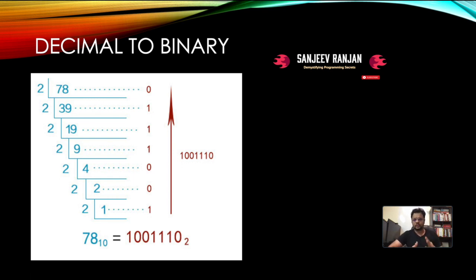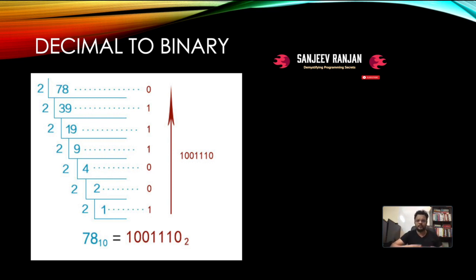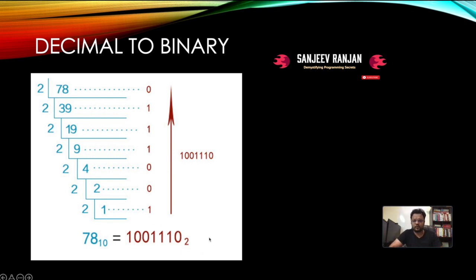The remainders will only ever be 0 or 1 when dividing by 2. After all consecutive divisions, there's a trick: you read the remainders from bottom to top. Whatever the last remainder was, go upward, and that gives you the binary representation of the decimal number. That's pretty much all there is to converting decimal to binary.